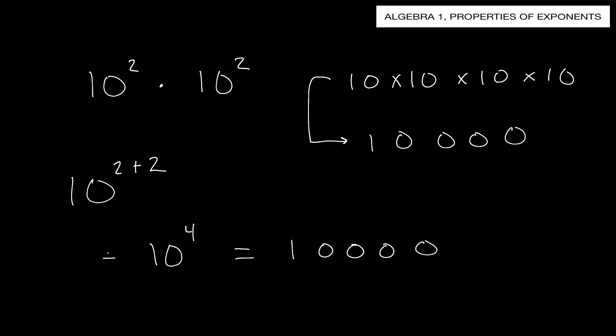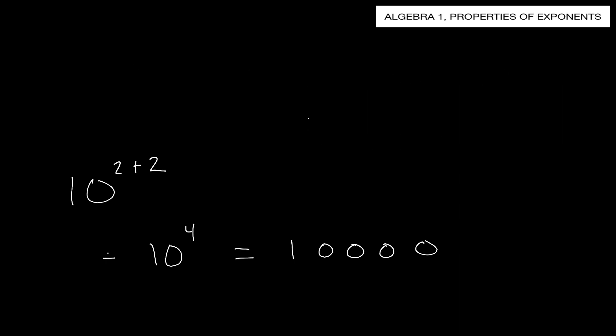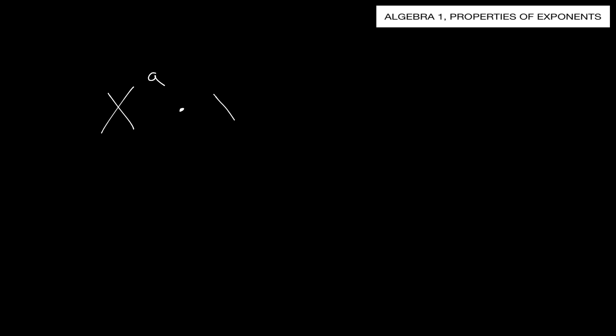The key to all this is this rule: if you have x to the a times x to the b, that equals x to the a plus b. The rule is these have to be multiplied together - similar bases being multiplied - and you're going to add those exponents. That's the rule we'll be using.